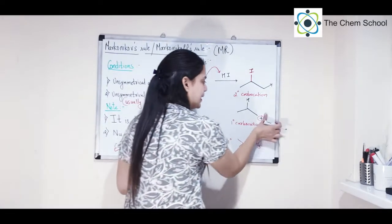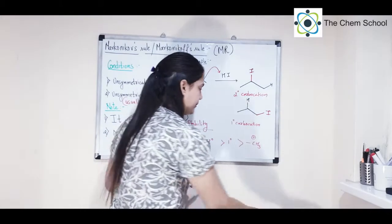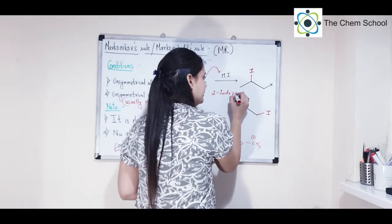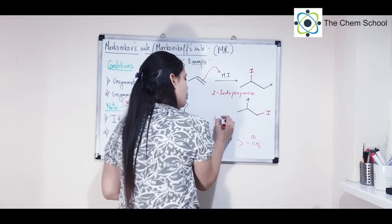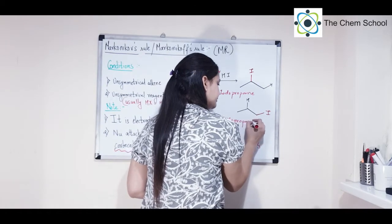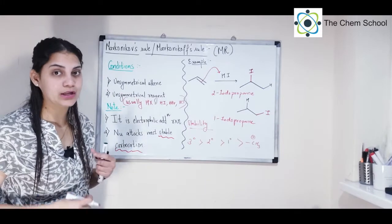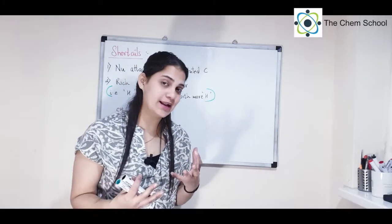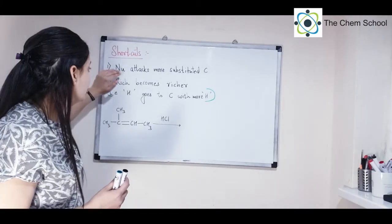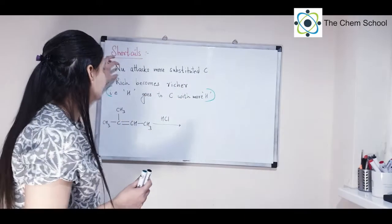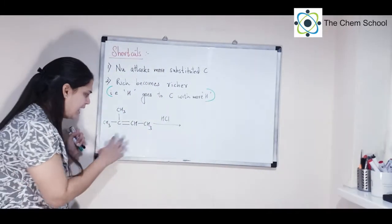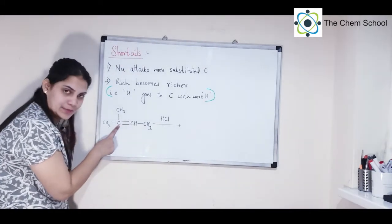Wherever you have the positive charge, the iodide goes there. So the major product has iodide at the secondary carbon — that is 2-iodopropane — while the minor product is 1-iodopropane. Now, there are also shortcuts to solve Markovnikov's rule problems. The first shortcut: the nucleophile (negative part) attacks the more substituted carbon. Across the double bond, identify which carbon has more carbon substituents — the negative part goes there.